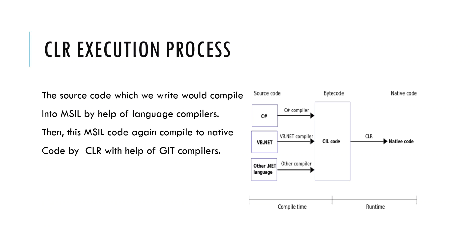What is the CLR execution process? When you write any code using any .NET supported language, when we compile it, it compiles to MSIL code using the language-specific compiler. Then the code goes to the CLR, which compiles this MSIL code to native code with the help of the JIT compiler.